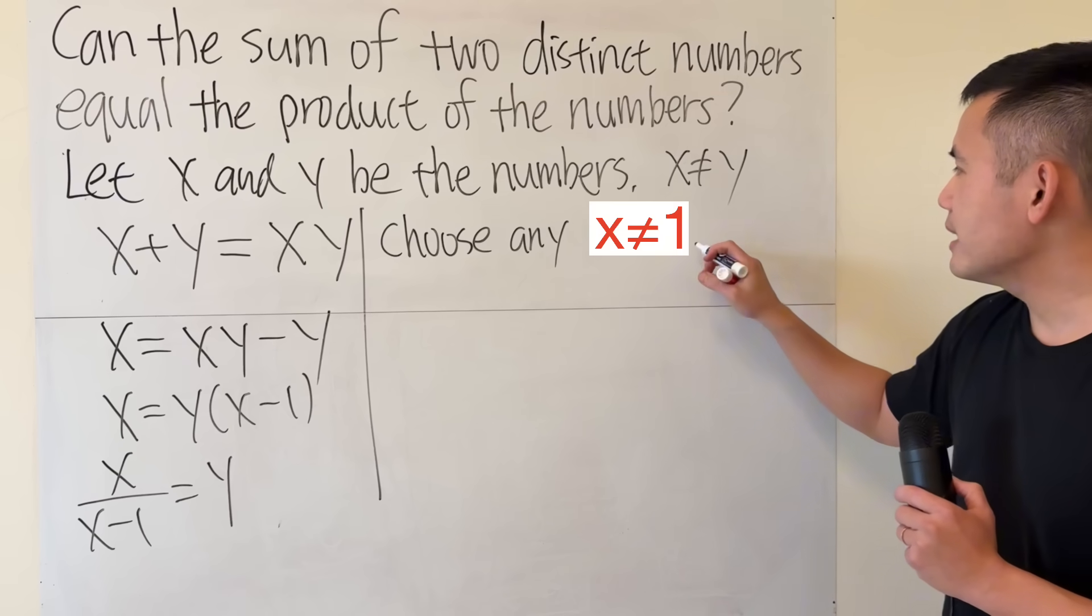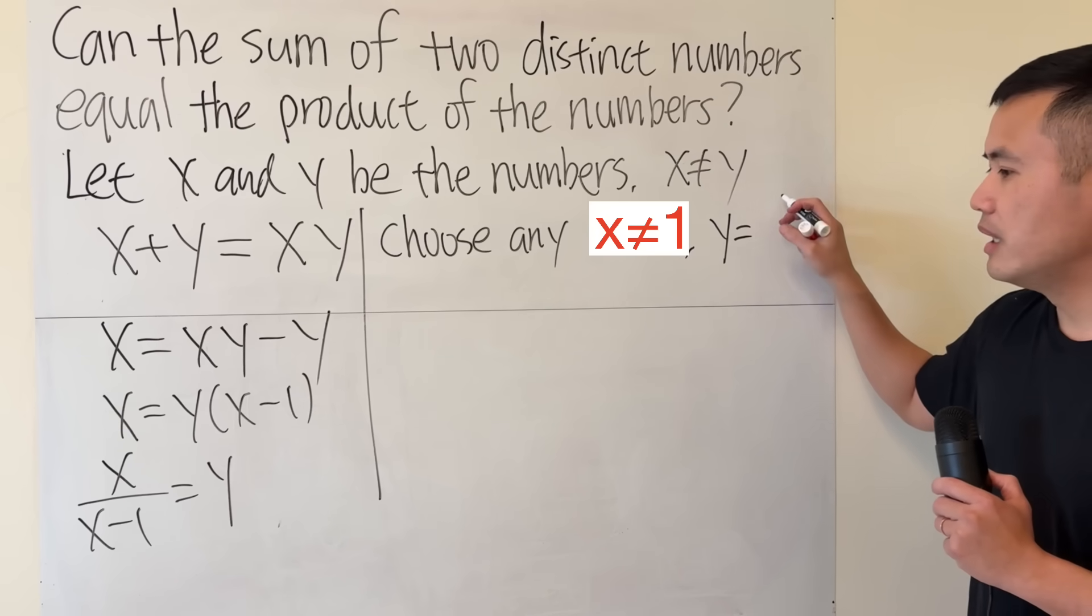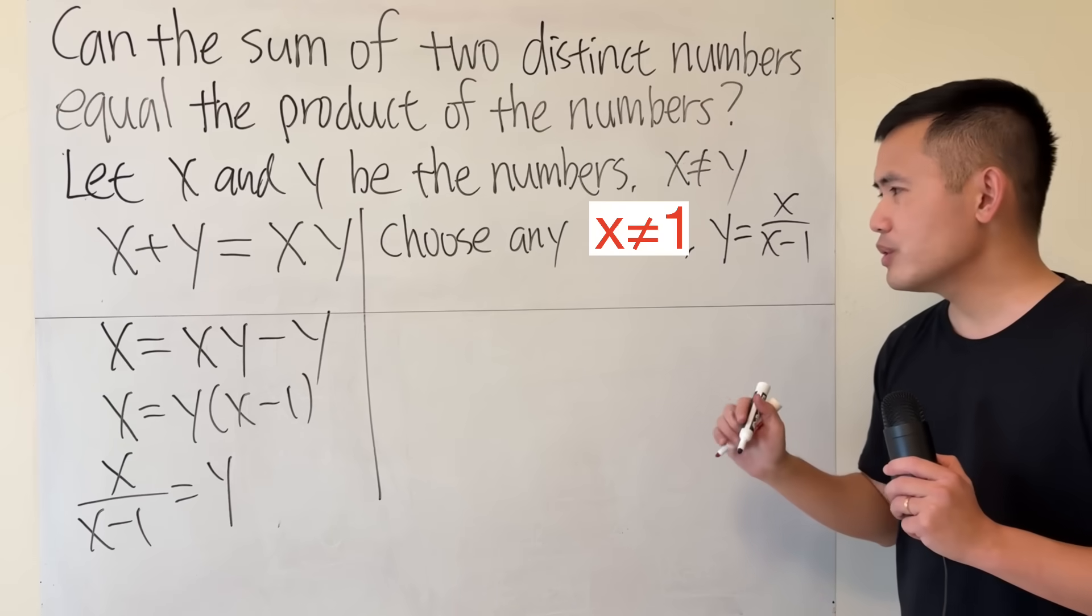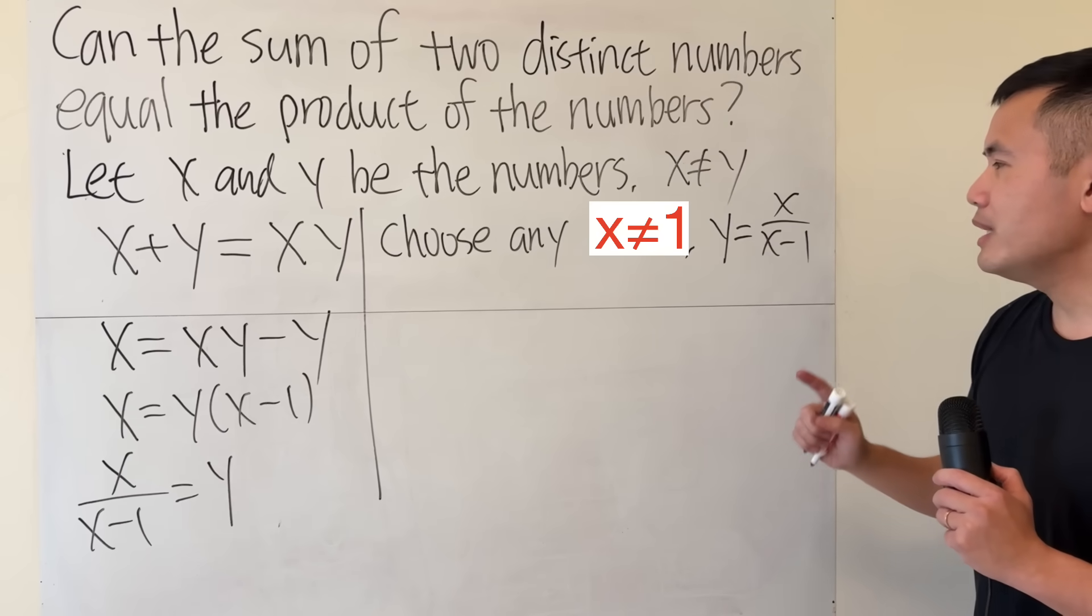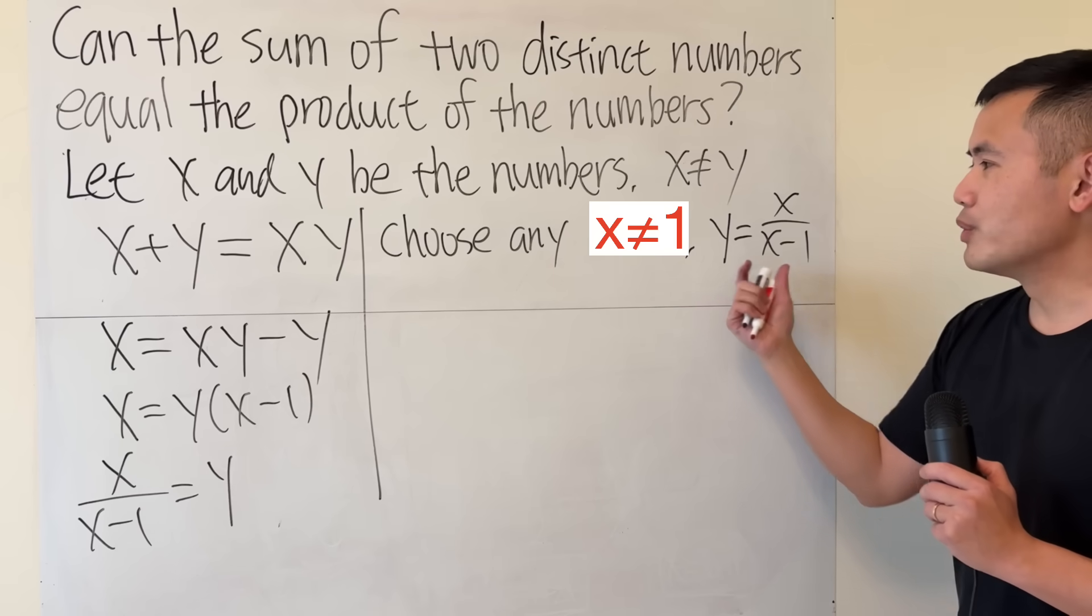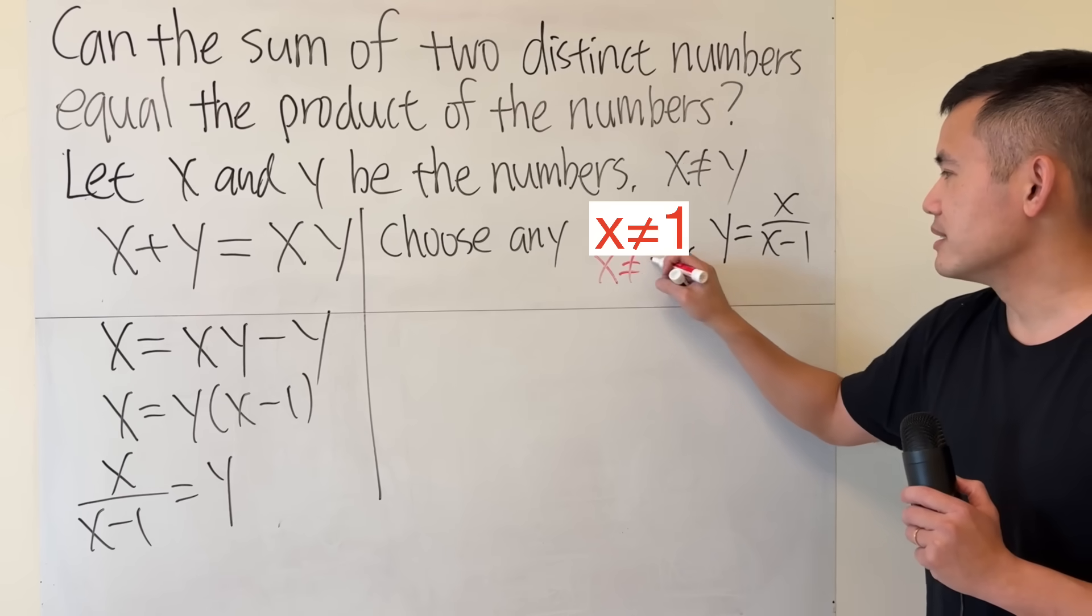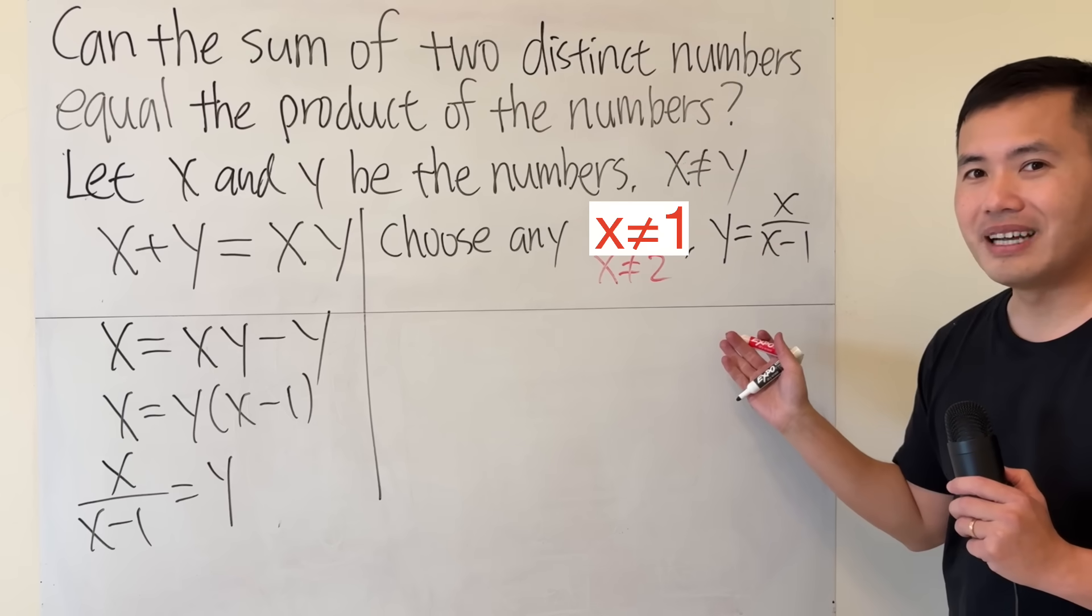Once we have that, then we will know y would be x over (x minus 1). And we just have to make sure that they are not equal. And by the way, the only way for them to be equal is x equals 2. So I'm also going to say x is not equal to 2. And you can do whatever you want now.